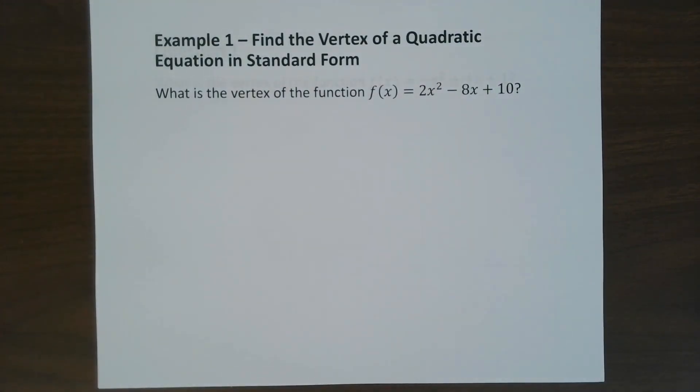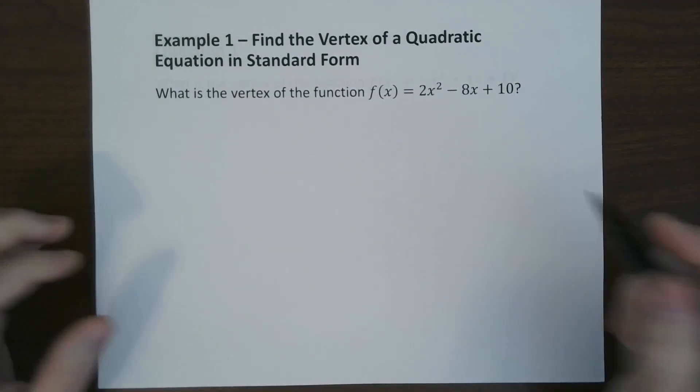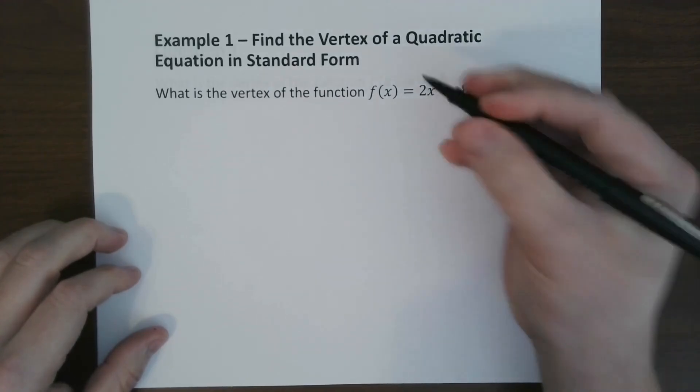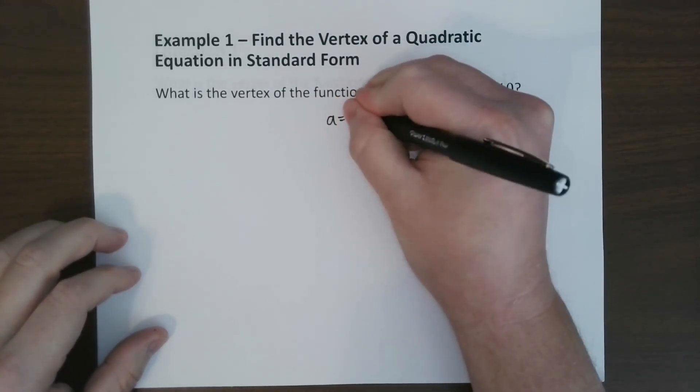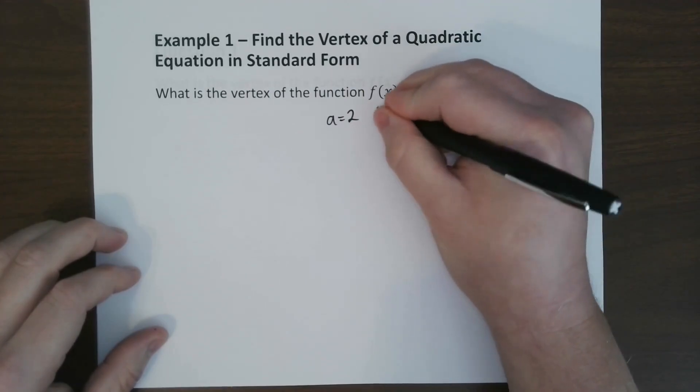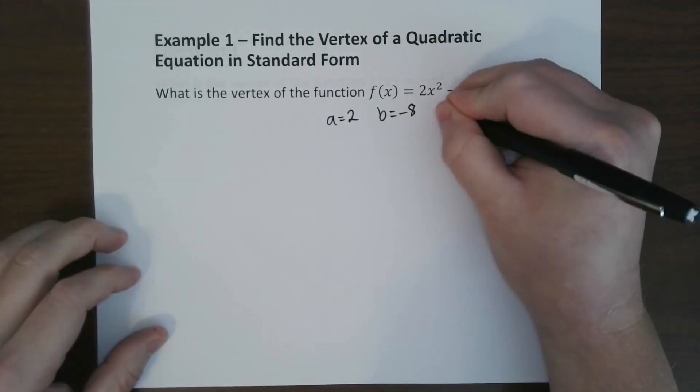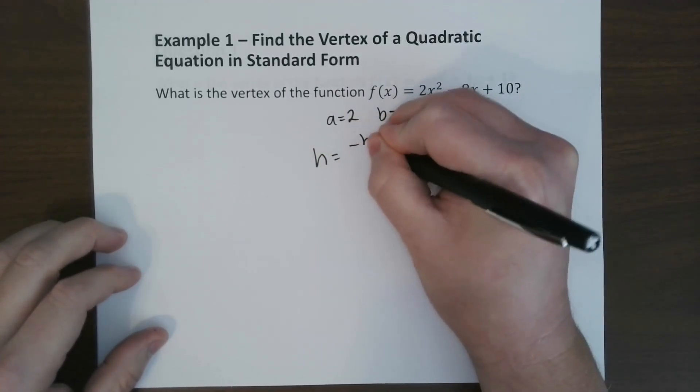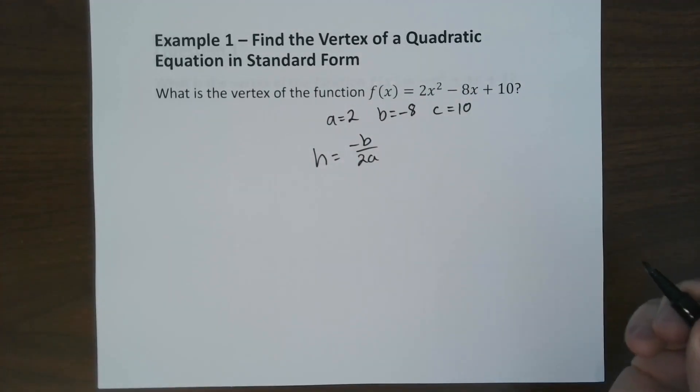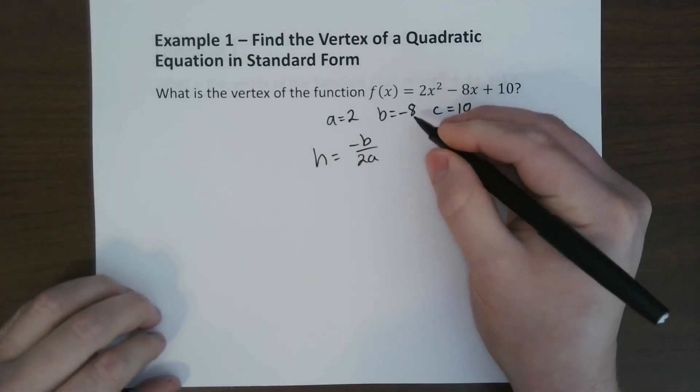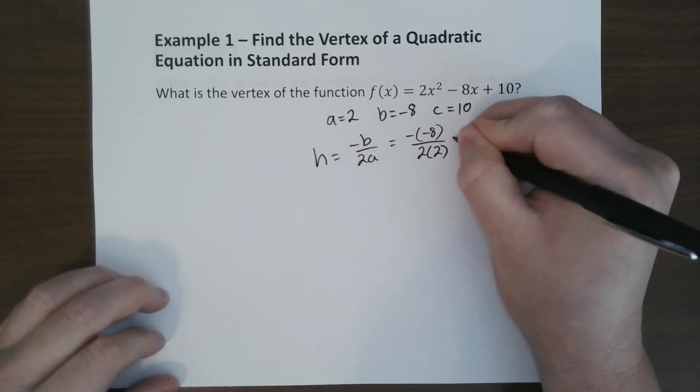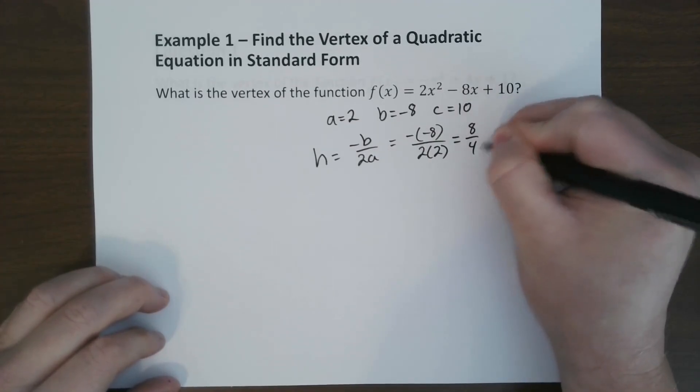So using that form, we can find the vertex of any standard form equation. So if we take a look at this, the coefficients between each of these terms is your a, b, and c. So my a is 2, my b is negative 8, and my c is 10. So if we use the equation negative b over 2a, we can find the x component. So the way we do that is we just plug it in. So negative negative 8 over 2 times 2, which would be 8 over 4, which is 2.